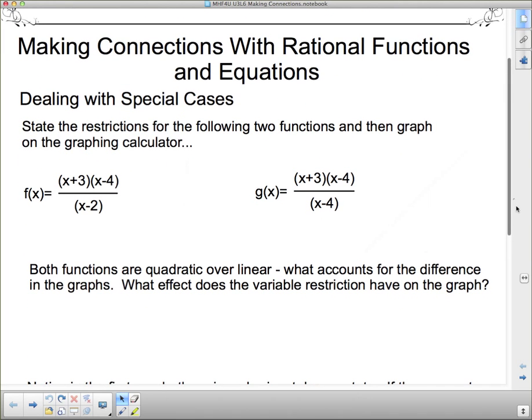We're taking a look at two different special cases. It says state the restrictions for the following two functions and then graph on the graphing calculator. I'm actually going to use Desmos, not the graphing calculator, but you can use whatever's at your disposal. Desmos is much more pleasant than the graphing calculator. So state the restrictions. If we take a look at this thing, this is a quadratic divided by a linear. We haven't looked at ones like these yet. We know that x cannot equal 2 because we cannot have a denominator of zero, and x cannot equal 4 because we cannot have a denominator of zero.